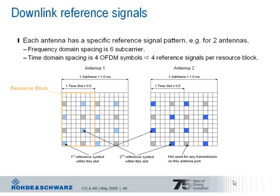Reference signals are transmitted at well-defined resource elements. A resource element is the smallest resource unit in LTE and translates to a subcarrier, respectively one OFDM symbol. In the frequency domain, every sixth subcarrier carries a reference symbol out of the generated reference signal pattern.